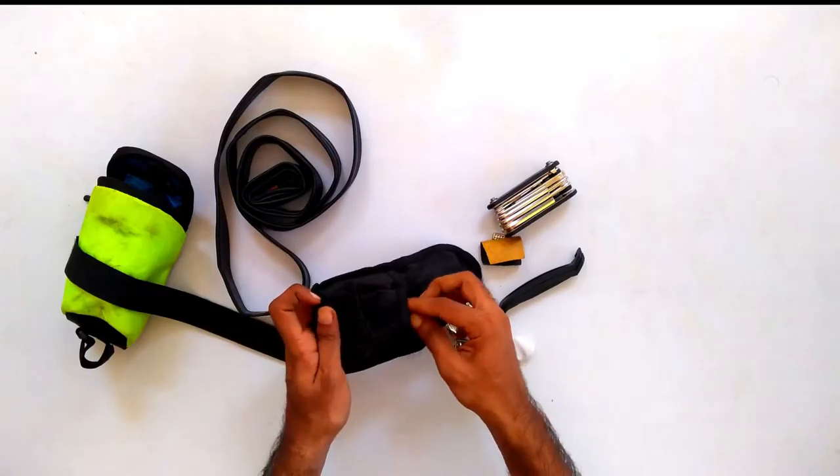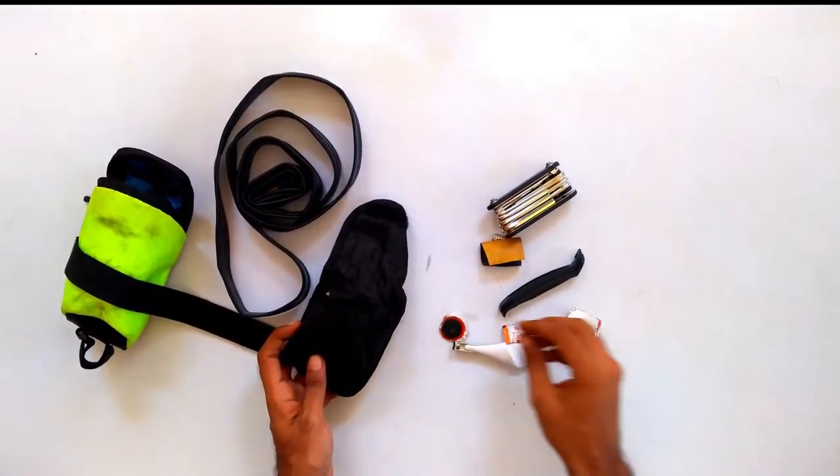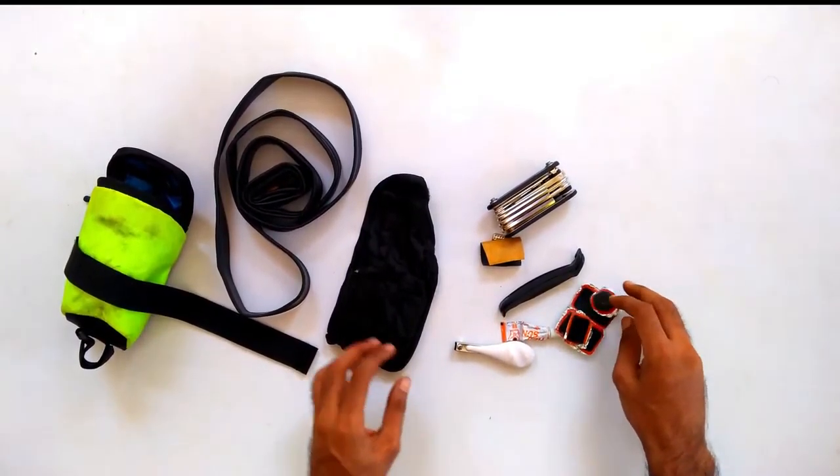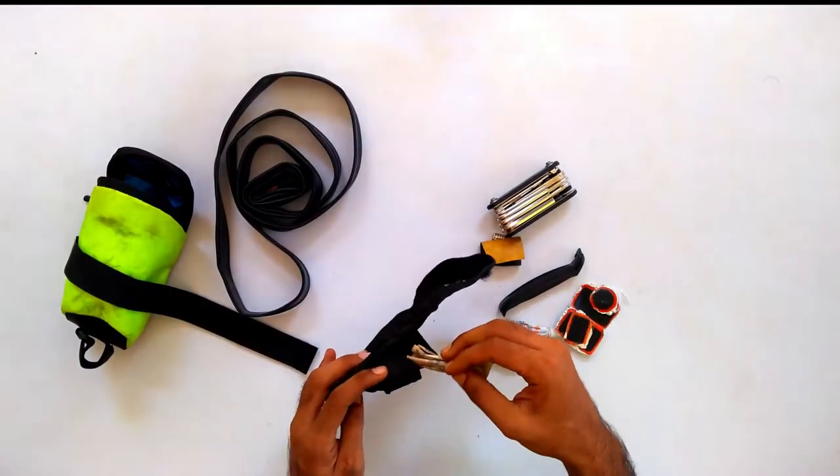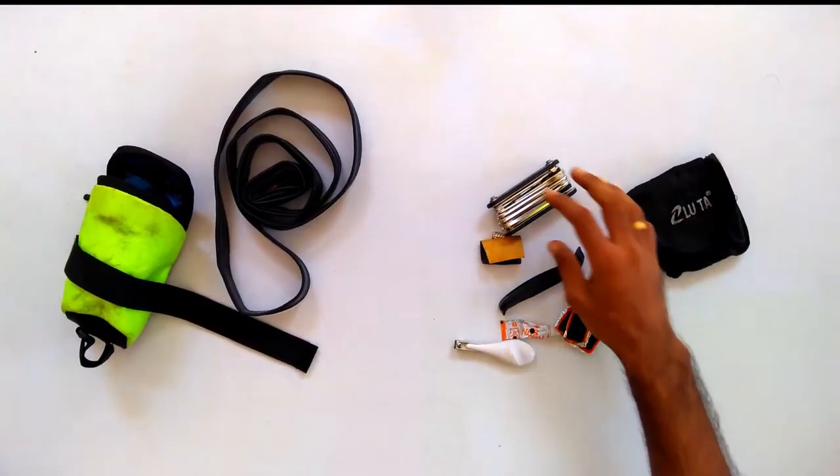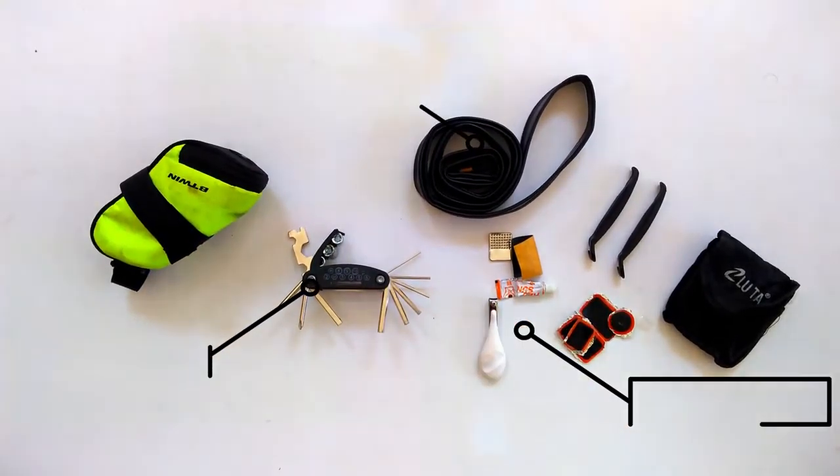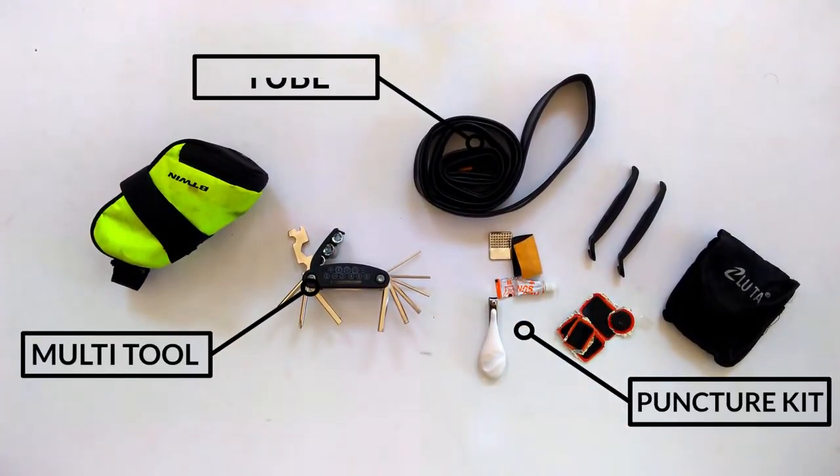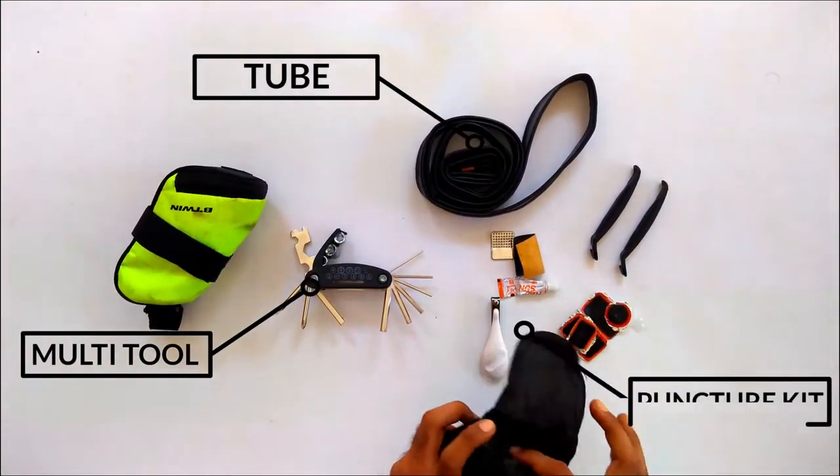Saddle Bag. Possibly the most convenient item on this list. Almost everything can go in here. Your phone, a spare tube, cash, and sits out of the way below your saddle. Ensure your pockets are free to enjoy your ride.